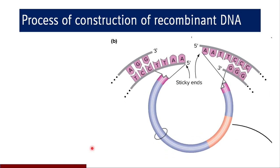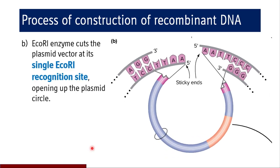Coming to the second step, the ECO-R1 enzyme cuts the plasmid vector at its single ECO-R1 recognition site. This particular polylinker sequence had a site specific for ECO-R1, so ECO-R1 has acted upon it and cut the plasmid vector at its single ECO-R1 recognition site, opening up the plasmid circle.